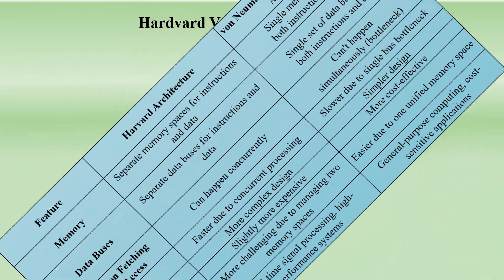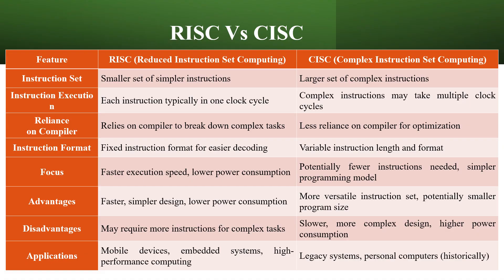Moving on to RISC and CISC architecture: RISC stands for Reduced Instruction Set Computing, and CISC stands for Complex Instruction Set Computing. There are simpler instructions in RISC and a large number of complex instructions in CISC. In RISC, because of the reduced instruction set, each instruction has only one clock cycle.